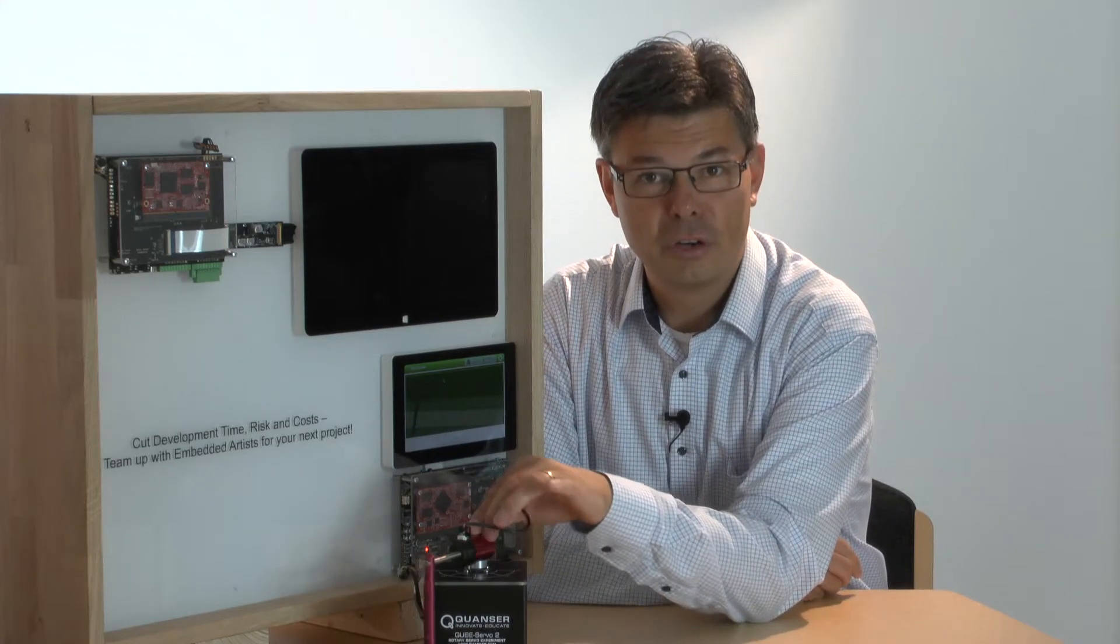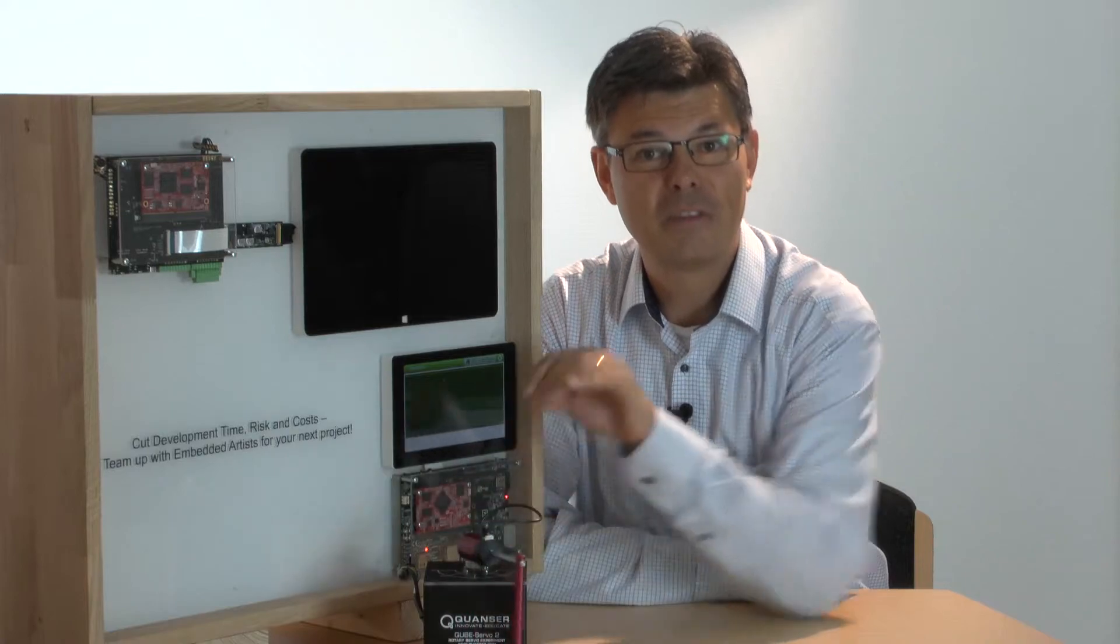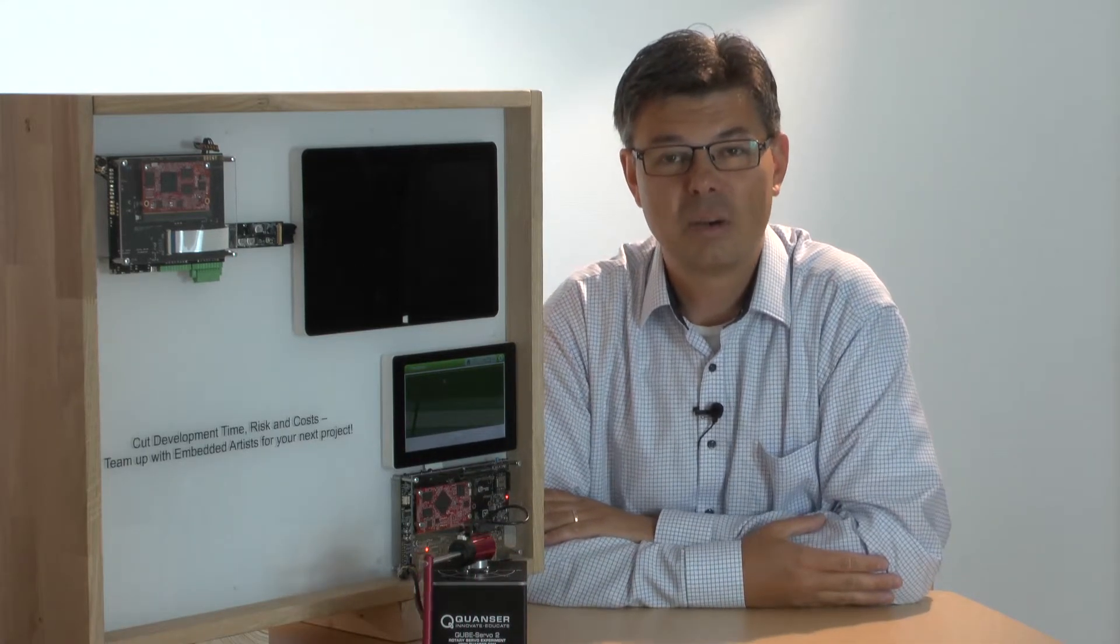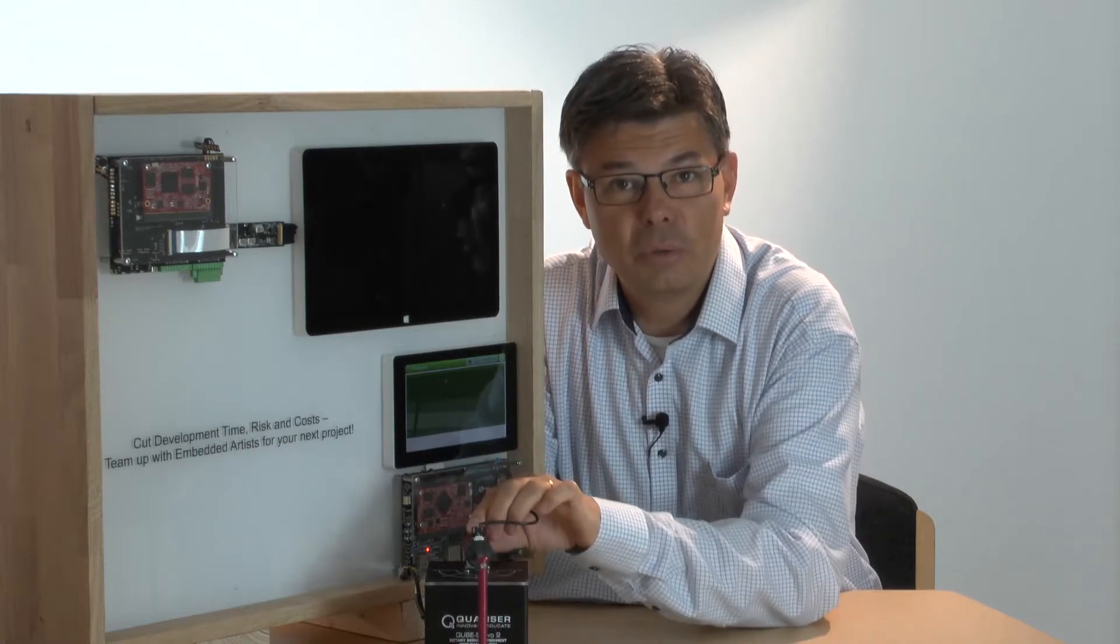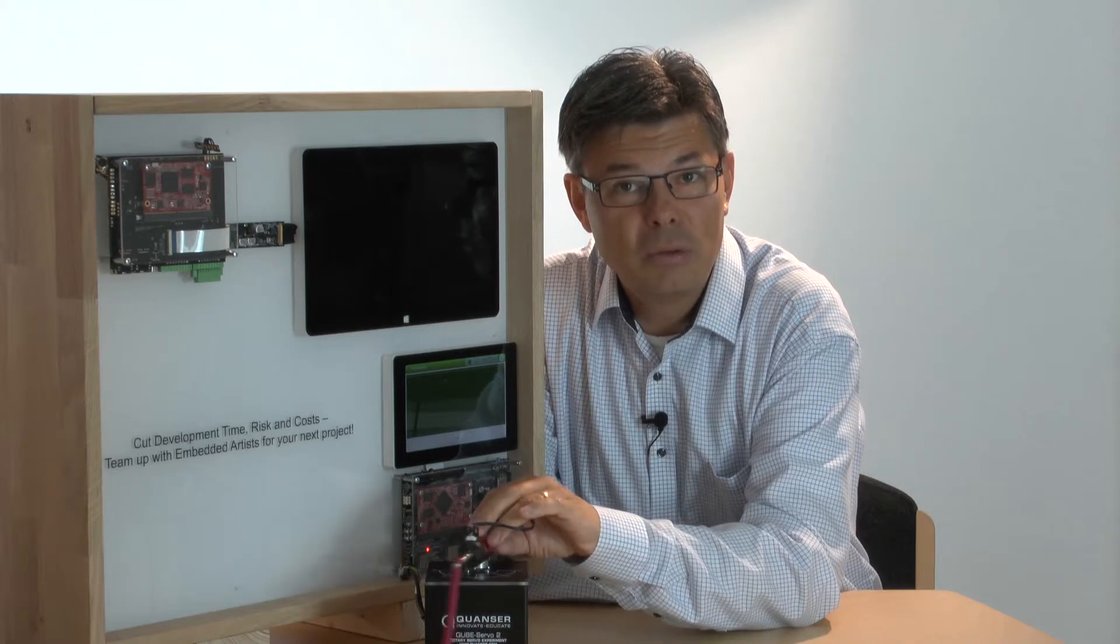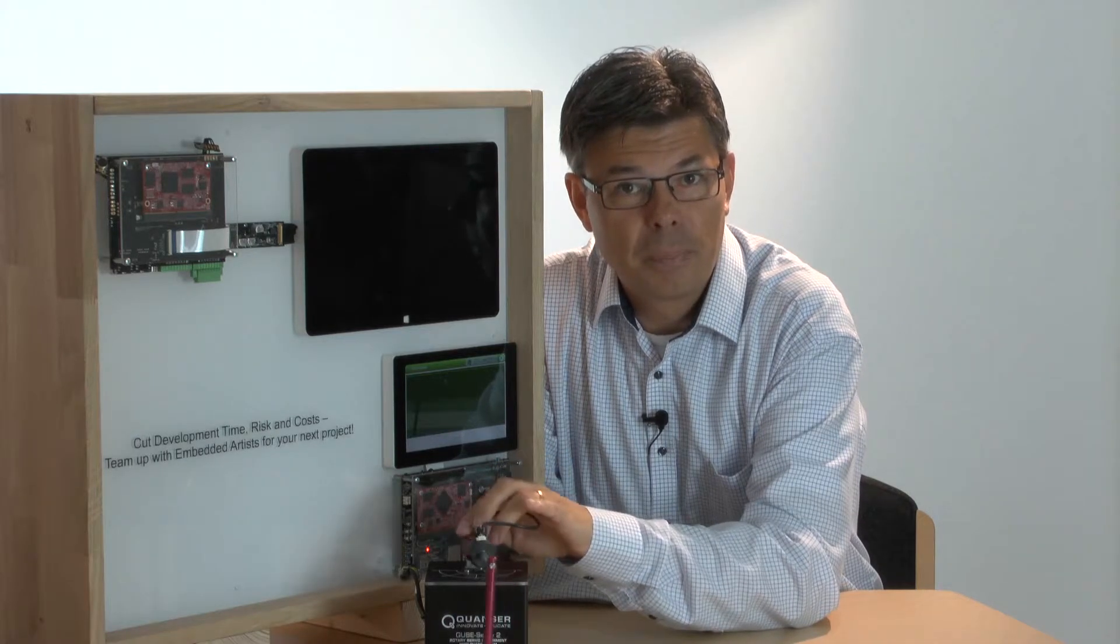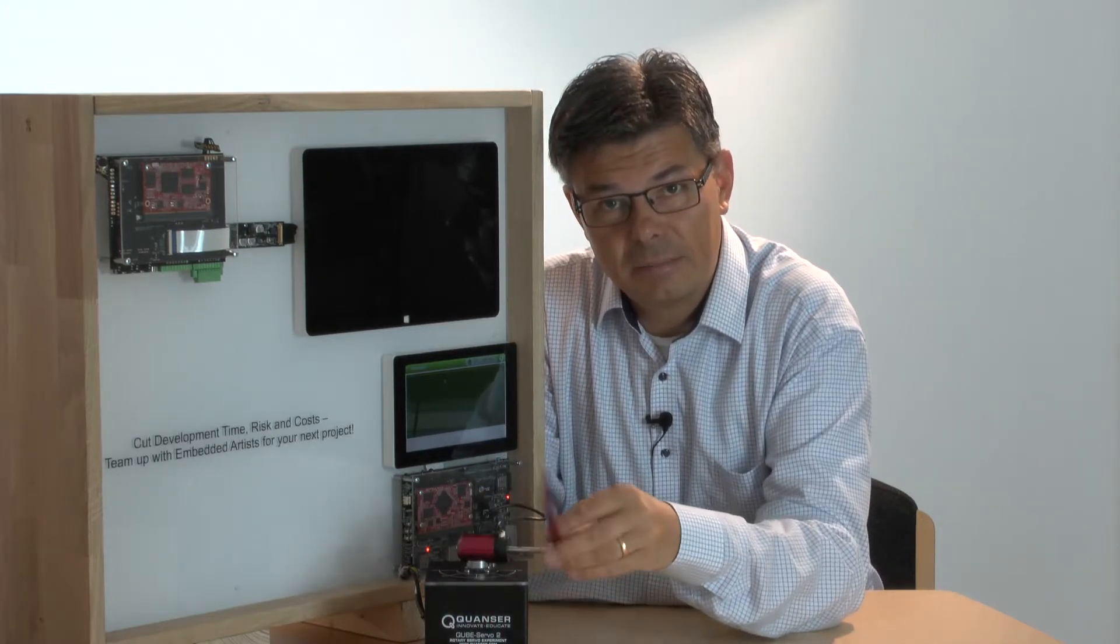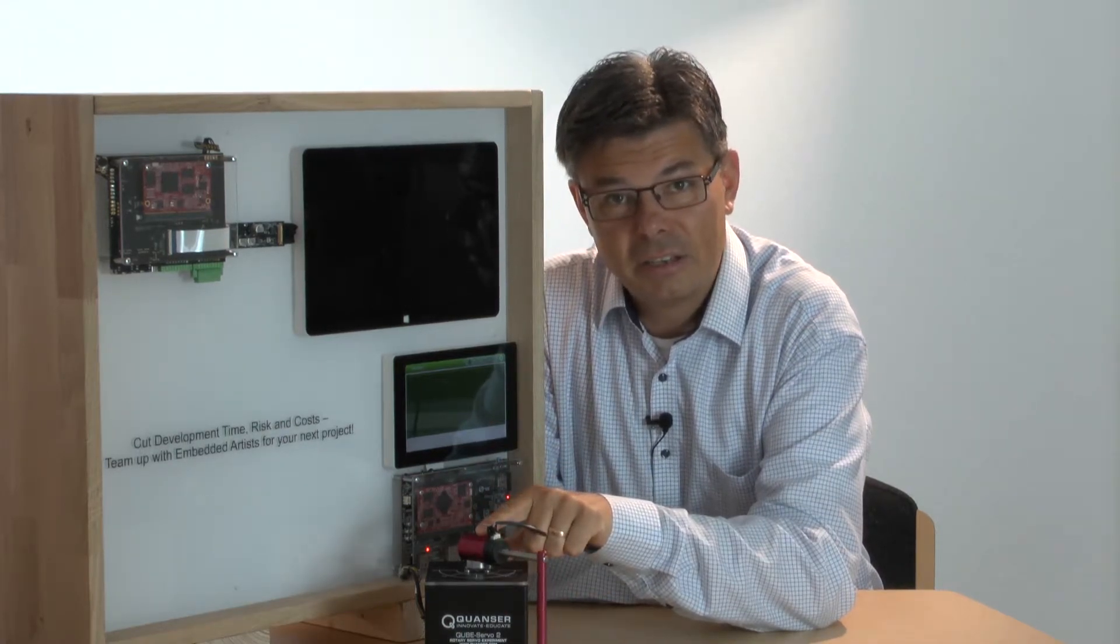Here, we have an inverted pendulum. It's a general control loop problem that you can find in, for example, rockets and a Segway. Inside the box, there is a brushless DC motor, and that's the only thing that can be controlled. We can read two angular positions, this angle and this angle. So, this is not a motor, it's just an angular sensor.